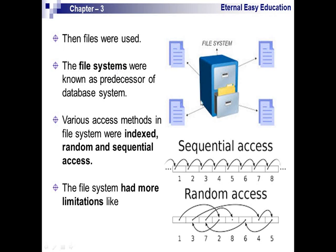When using the file system, two methods were used to retrieve and manipulate data: the indexed random file access method, and the sequential access method. Sequential means files are in order, so you go through them one by one. Random access means you can fetch any data from any location. However, even the file system had more limitations, so we are moving to the next concept: DBMS.